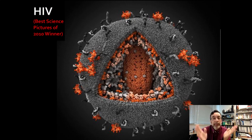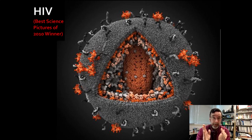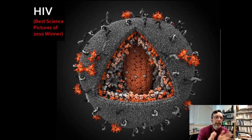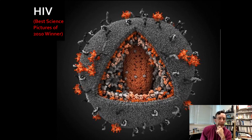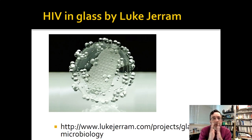This is the retrovirus that is the most infamous of all — this is HIV. This is interesting because this is a best pictures of 2010 winner. The most famous coronavirus pictures that came out in 2020 were also the same exact color scheme. This is almost like the mascot colors of retroviruses. If you look closely at those coronavirus pictures, they are different from HIV — they even look different at this scale. HIV is a very different virus than SARS-CoV-2.